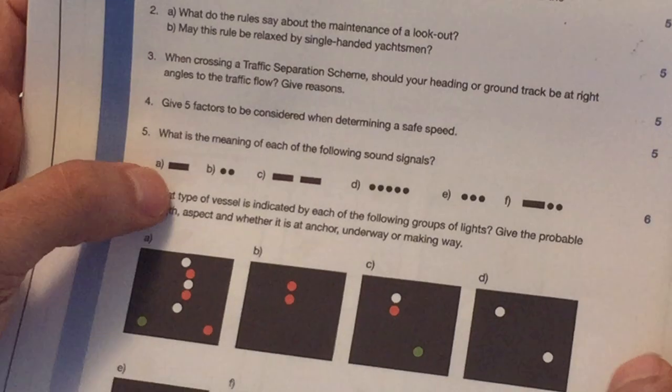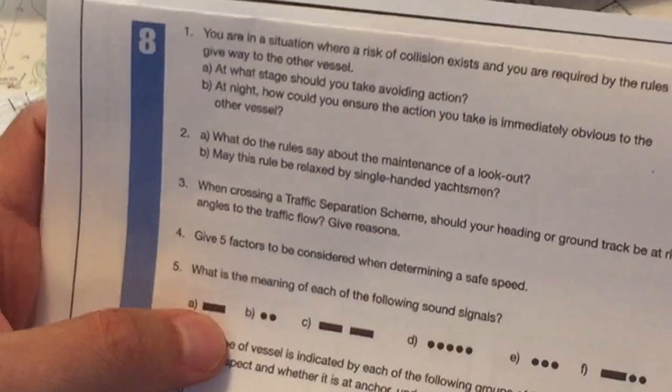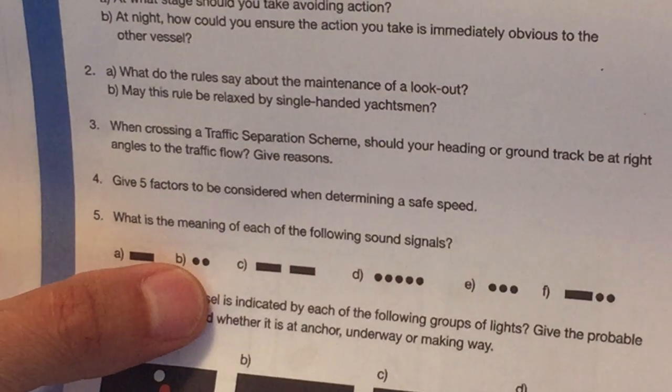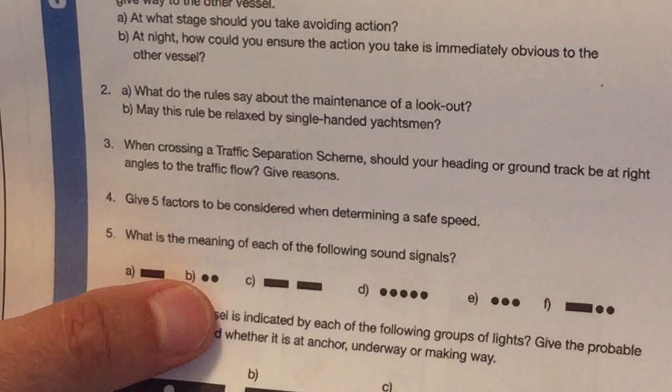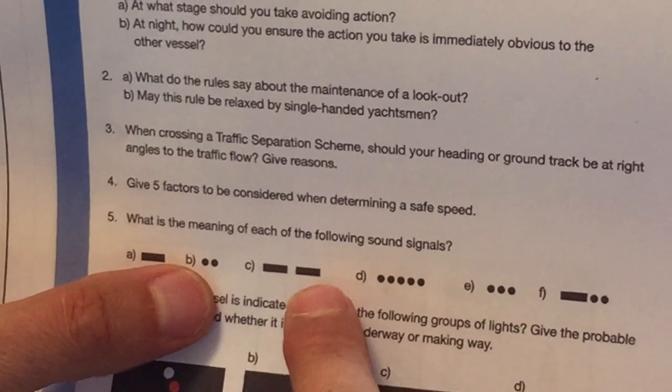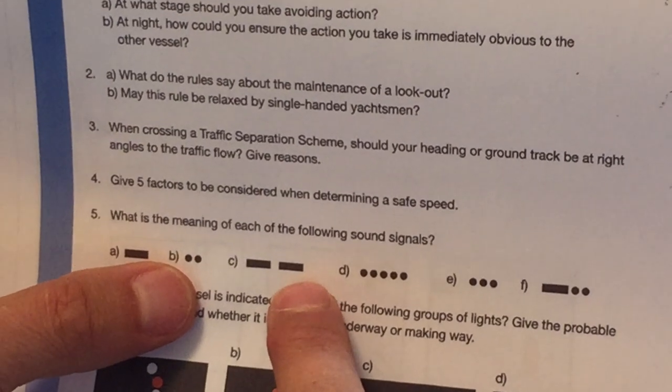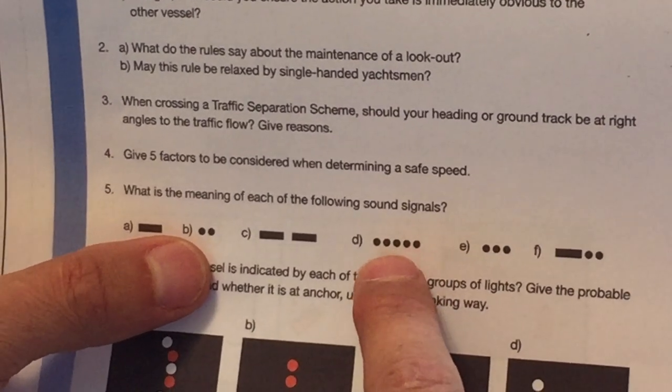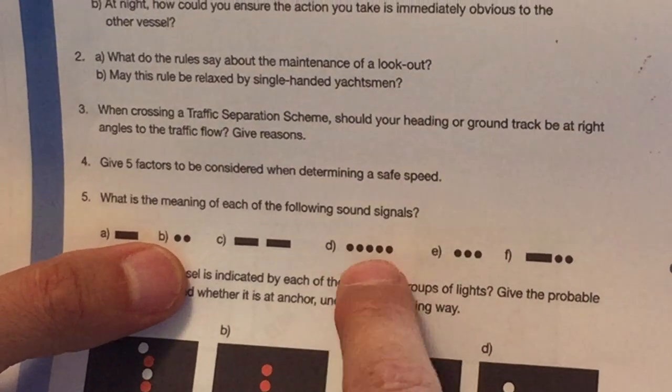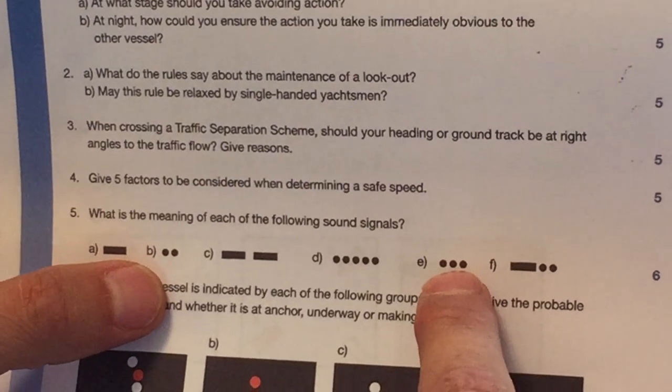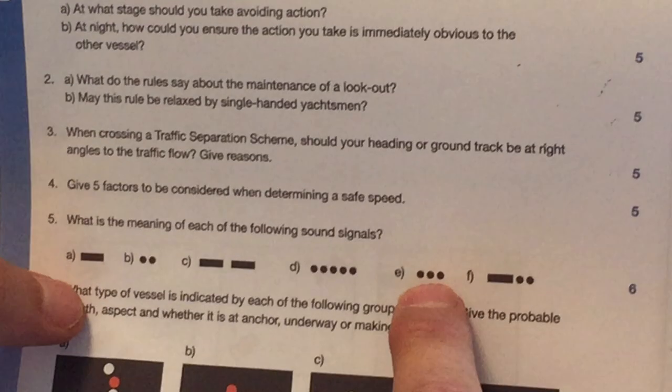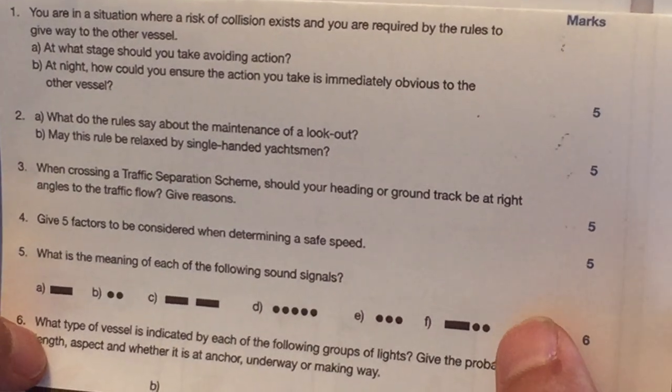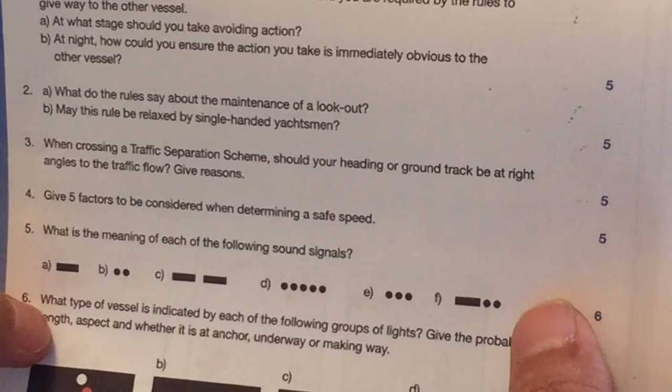What is the meaning of each of the following sound signals? Okay, one long, you would give when approaching a blind bend, and it's also the signal of a power vessel in fog. Two short means I am altering course to port. Two long, that is also a power vessel in fog, but it's underway but not making way. Five short means your intentions aren't clear or stop carrying out your intentions. It's not safe, I don't understand what you're doing. Three short indicates your engines are in a stern propulsion. Okay, you're in reverse. One long and two short, that is everything other than a power vessel. That's the signal that would be given in fog.